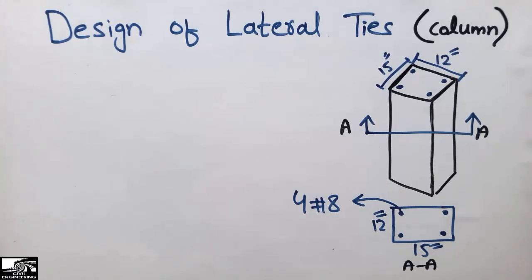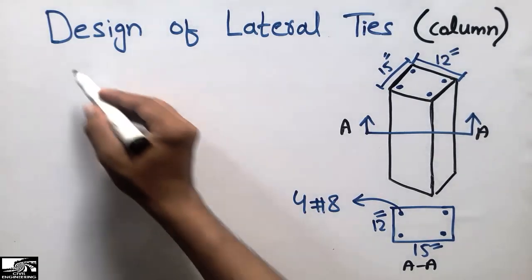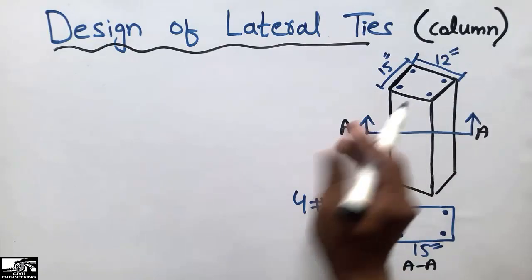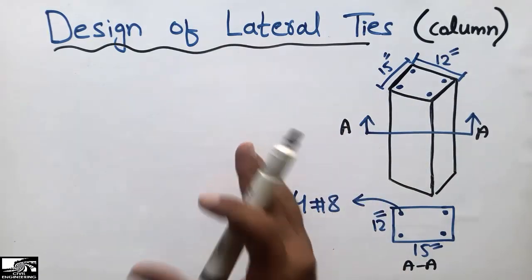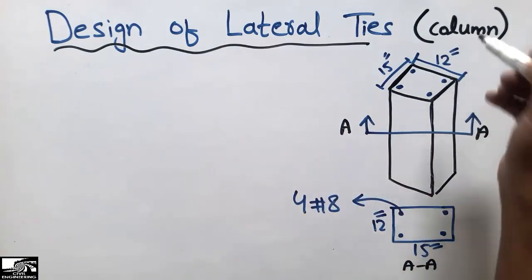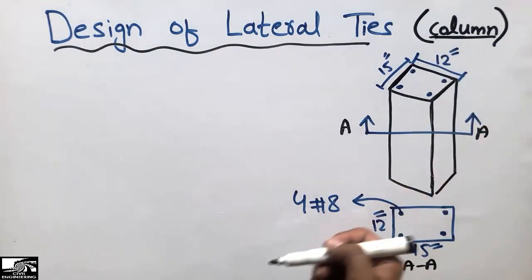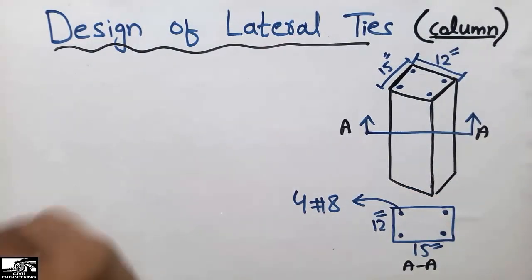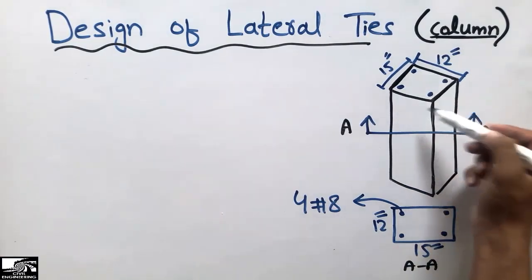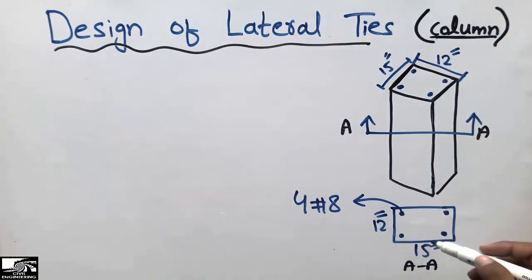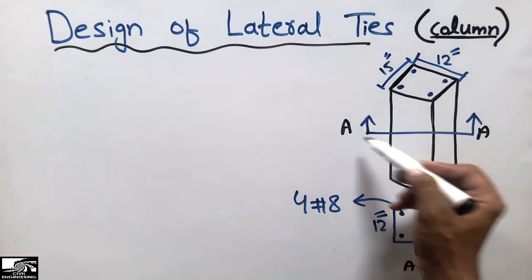Hello guys, welcome back to the C1 Engineering YouTube channel. Please subscribe to our channel for daily C1 Engineering videos. Today our lecture is about the design of the lateral ties for the column. We are going to design the lateral, or transverse, reinforcement for the column, as shown in the figure with its cross-section detail.